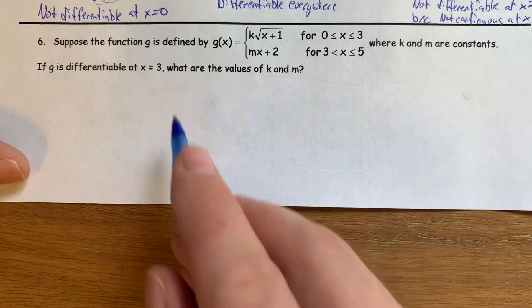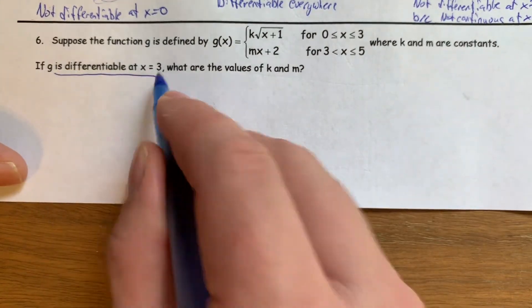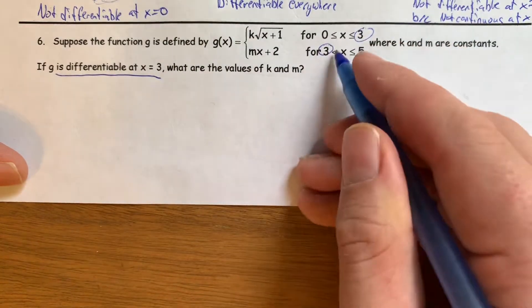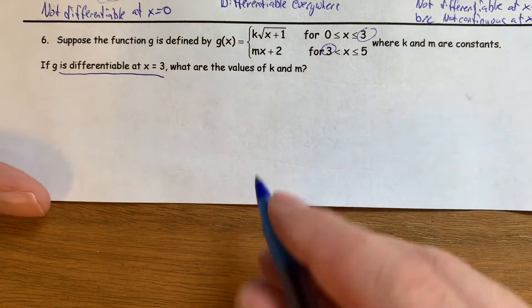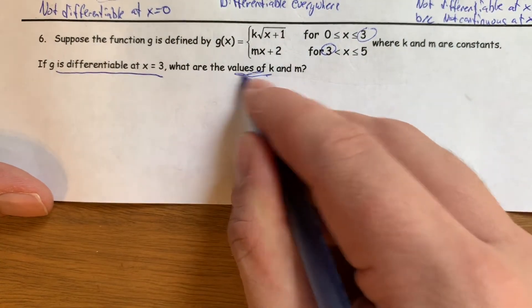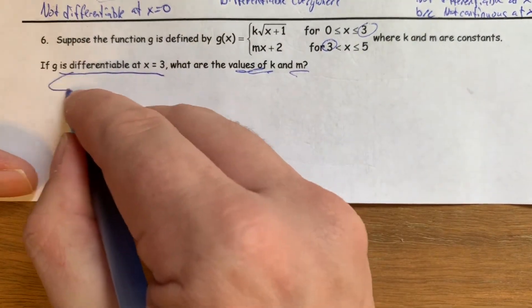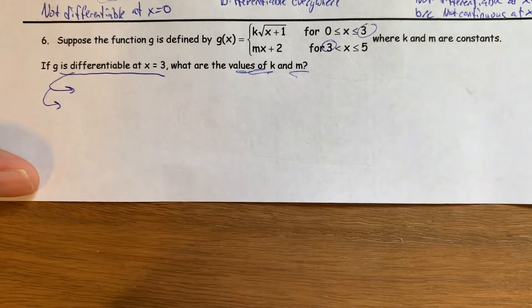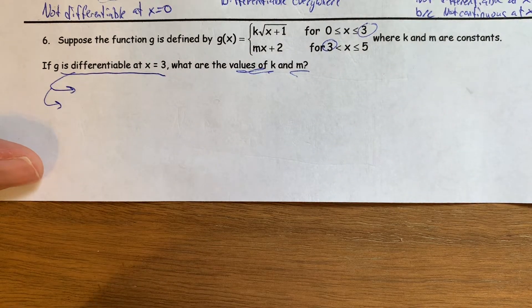If g of x is differentiable at x equals 3, so at x equals 3 where they meet up, this function is differentiable, what are the values of k and m? Well, let's make sure we understand the definition of differentiable. To be differentiable, what are the two things that need to be true?